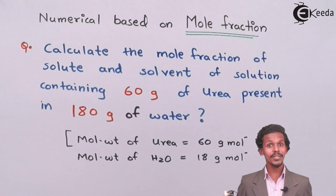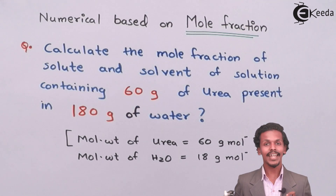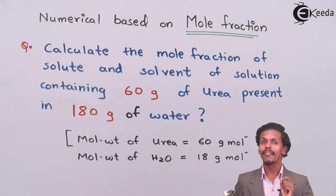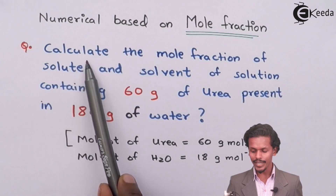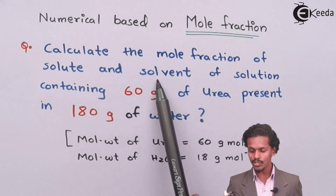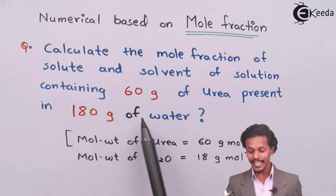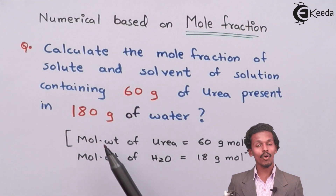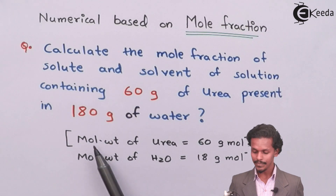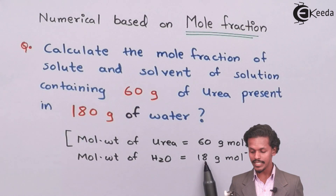On your screen you can see a numerical which is based on how to calculate the mole fraction of a solute and solvent present in the solution. The question is: we have to calculate the mole fraction of solute and solvent of a solution that contains 60 grams of urea present in 180 grams of water. The molecular weight of urea is 60 g/mol and the molecular weight of H₂O is 18 g/mol.